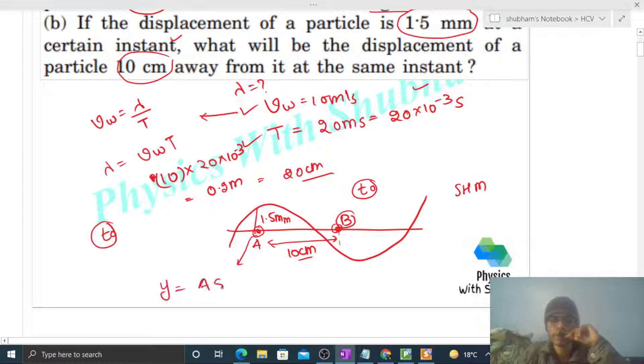So let's say particle A's SHM equation is something like y is equal to A sin omega into t. So what is given? y's value at T naught time, it means A sin omega into T naught that is given 1.5 mm, right?